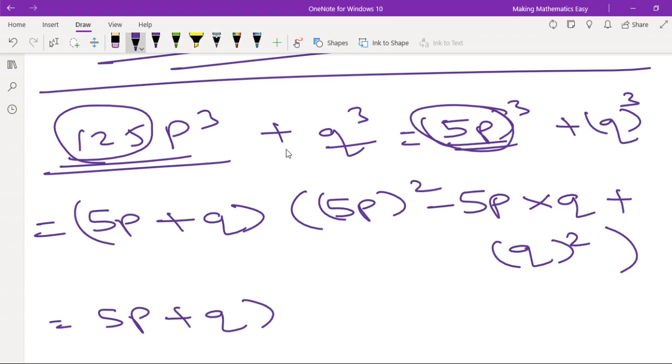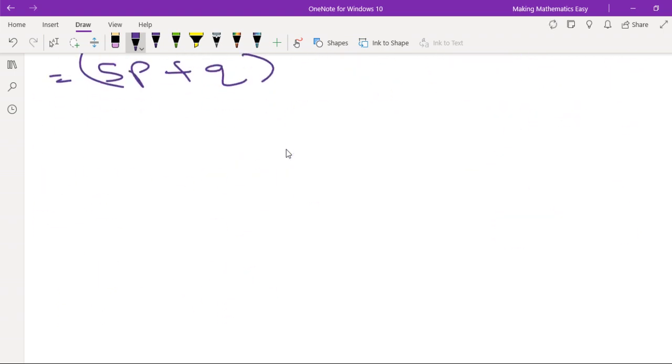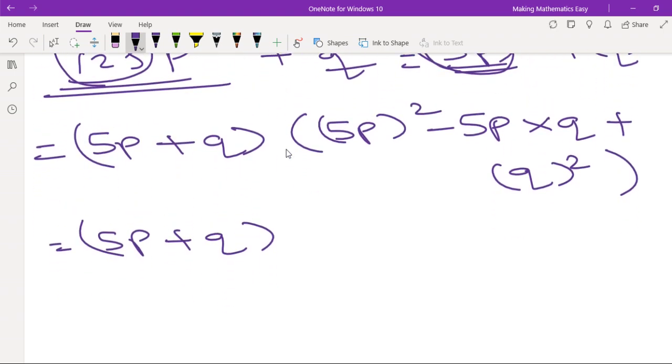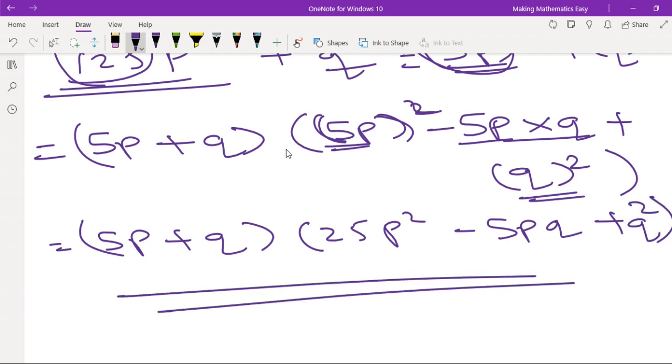So this will be 5P plus Q and in the second bracket, it will be 5P the whole square. So this will become 25P square and this is 5P into Q, so 5PQ plus Q square, and your second bracket close.